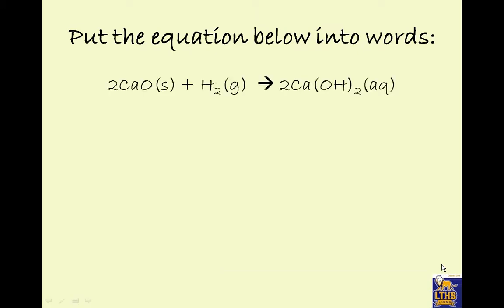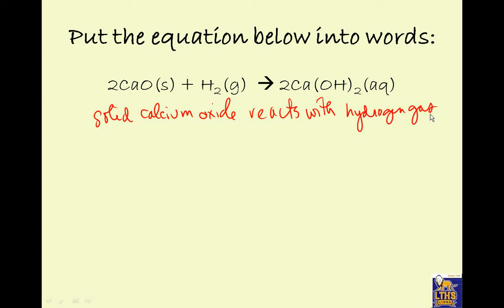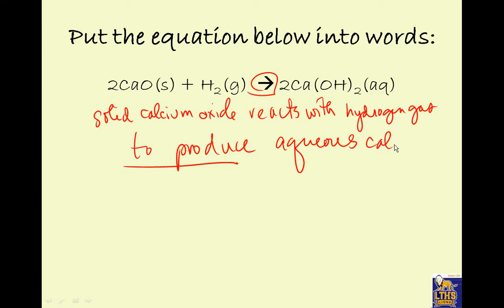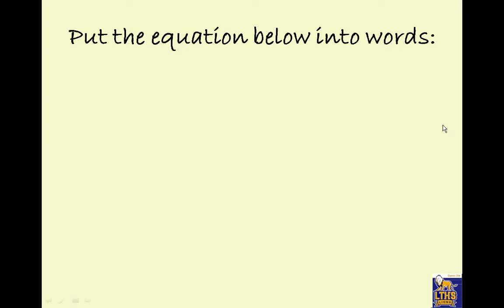So, we're going to be interpreting. Let's put this into words. 2CaOS plus H2OG arrow 2Ca(OH)2AQ. So, we need to translate it. So, this is saying solid calcium oxide. Hey, I know it's just called calcium oxide because it's a metal and a nonmetal. Do we need a Roman? No. So, it reacts with. That's the plus sign. Hydrogen gas. Notice the word gas came after hydrogen. To produce. It's the arrow. To produce. Aqueous. Calcium hydroxide. So, see all that time we spent. I'm sorry. I said oxide. But, hey, guess what? It's hydroxide. Notice that the word aqueous came before. Solid comes before. Gas usually comes after. Try it again.